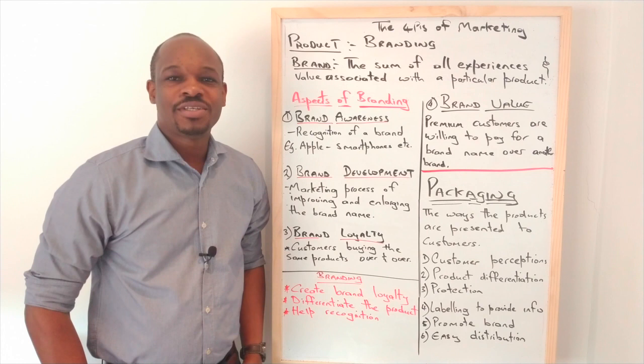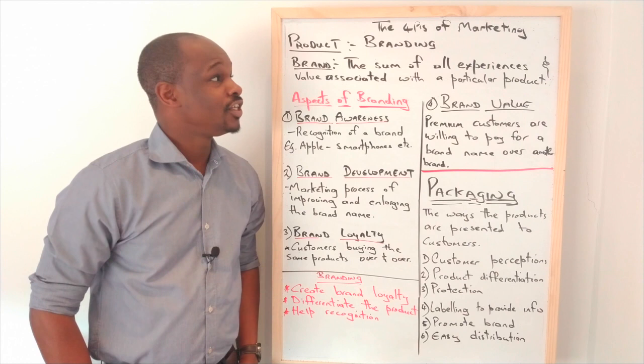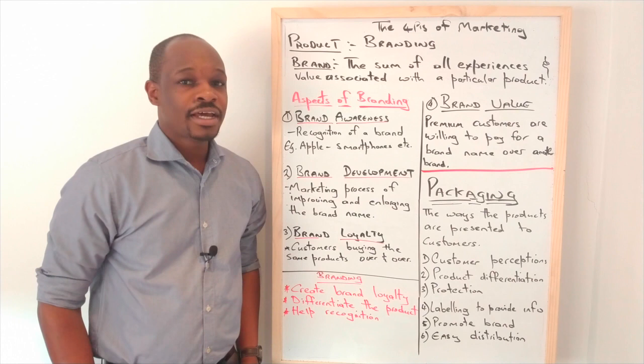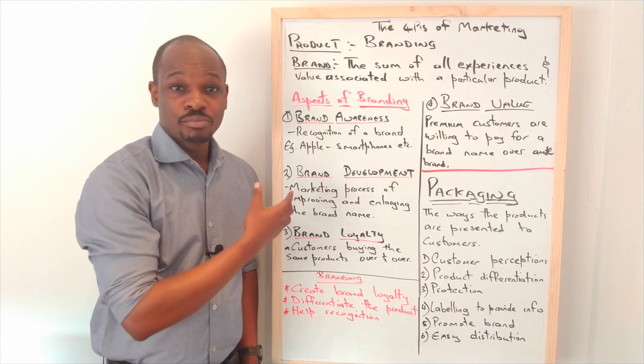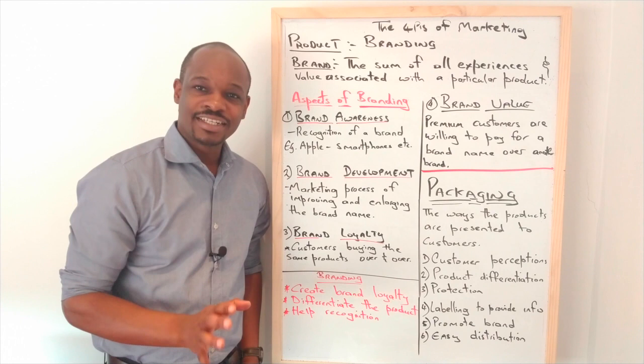Hi, thank you again for joining me. My name is Duane from QuickBiz Education. Today we want to continue looking at the four Ps of marketing, and we're looking at product today. In our previous videos, we looked at the BCG matrix — that's the aspect on the product — but for today we're going to be looking at branding.